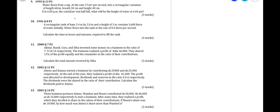Water flows from a tap at the rate of 27 cm³ per second into a rectangular container of length 60, width 30, and height 40. If at 6pm the container was half full, what will be the height of water at 6:04pm?